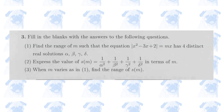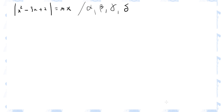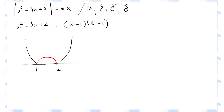Section 3, number 1. Let's try and visualize this equation. In order for this equation to have four distinct roots, the straight line mx has to go through the origin and have an angle such that the line cuts through the graph of this quadratic equation four times. So this would be alpha, beta, gamma, and delta.